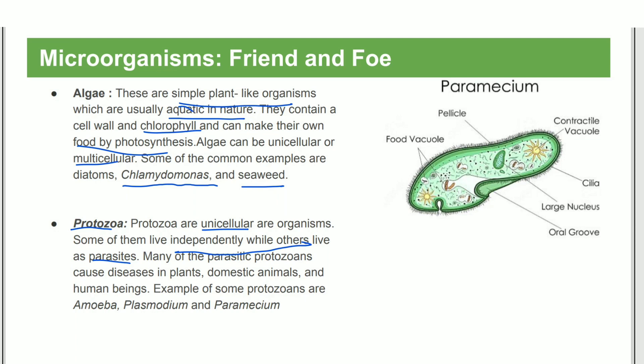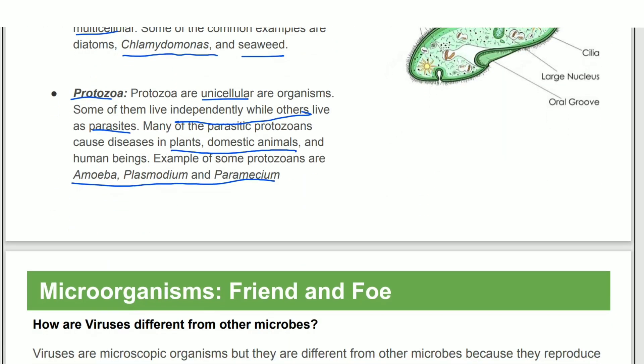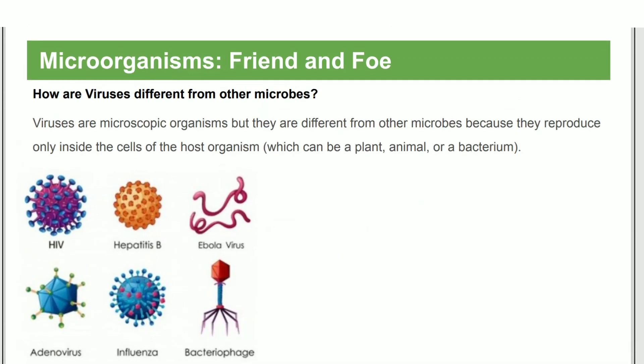Many protozoa cause diseases in domestic animals. Examples include amoeba, plasmodium, and paramecium. Viruses are microscopic organisms that are different from other microbes — they can only reproduce inside the cells of a host.